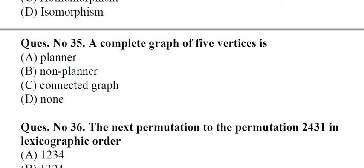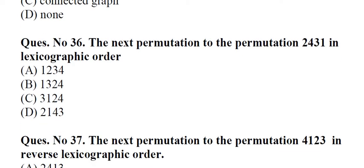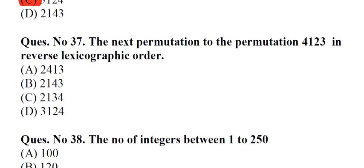Question number 35: A complete graph of 5 vertices is A. Planar, B. Non-planar, C. Connected graph, D. None. Answer: B, Non-planar. Question number 36: The next permutation to the permutation 2431 in lexicographic order. A. 1234, B. 1324, C. 3124, D. 2143. Answer: C, 3124. Question number 37: The next permutation to the permutation 4123 in reverse lexicographic order. A. 2413, B. 2143.